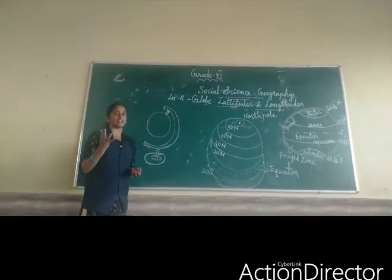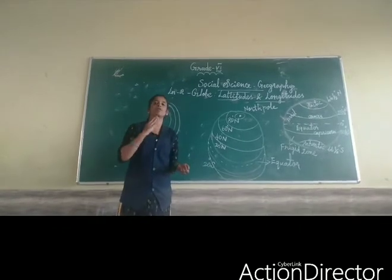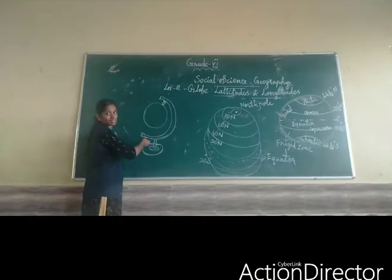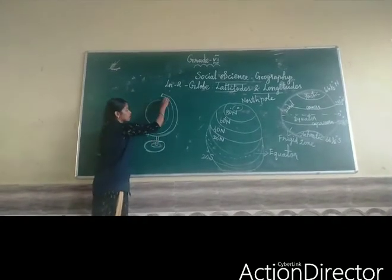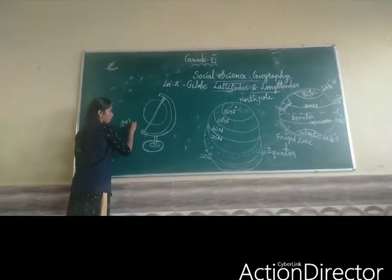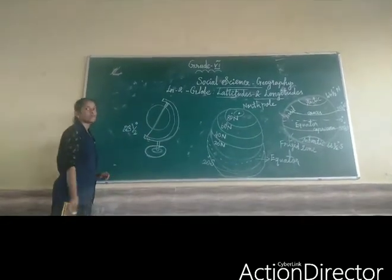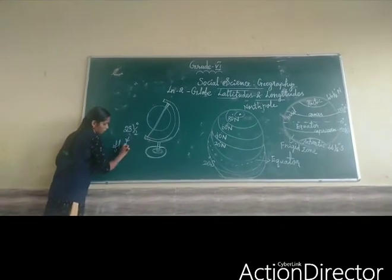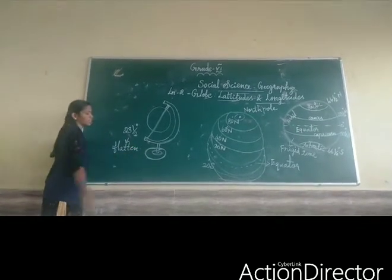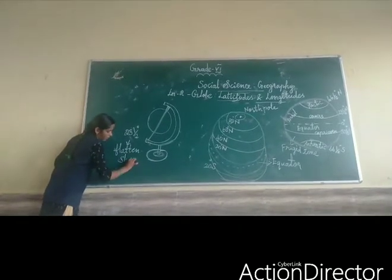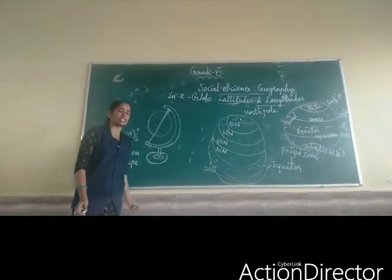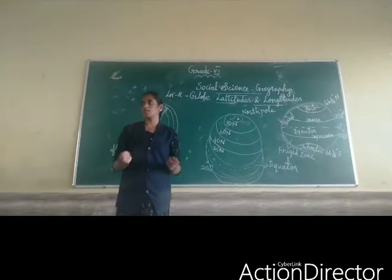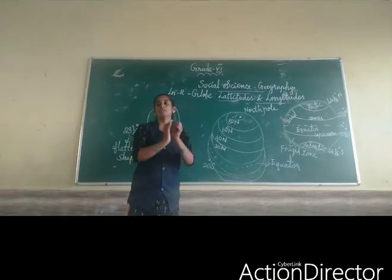Have you seen our earth? For the earth, we made a globe — it is also looking like the same. This is tilted at 23 and a half degrees. It is a flattened shape, not a perfect sphere. Our earth also looks like a flattened shape.